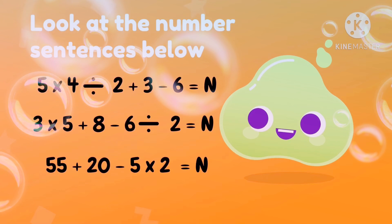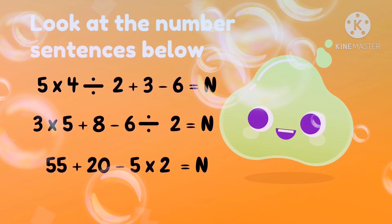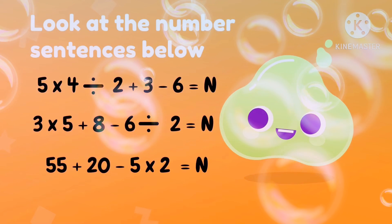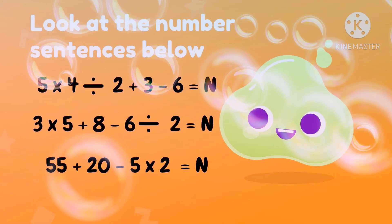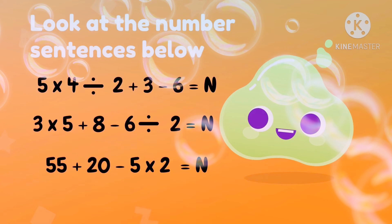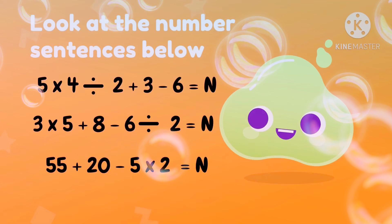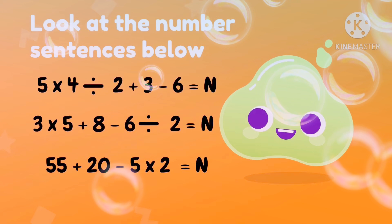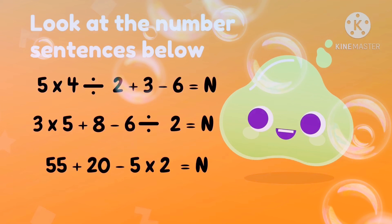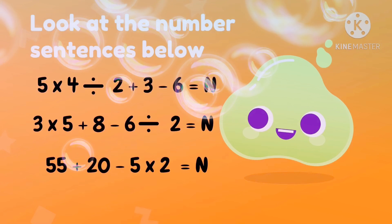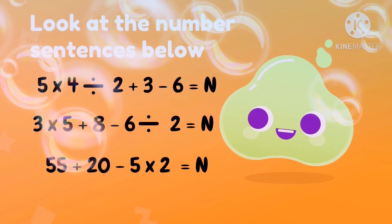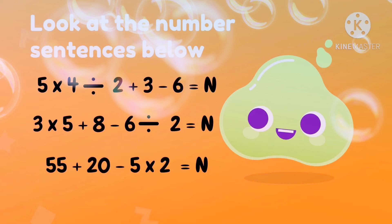Let's have these number sentences below. So we have: 5 times 4 divided by 2 plus 3 minus 6 is equal to N; then 3 times 5 plus 8 minus 6 divided by 2 is equal to N; and 55 plus 20 minus 5 times 2 is equal to N. So the question is: how many operations are there in each number sentence?